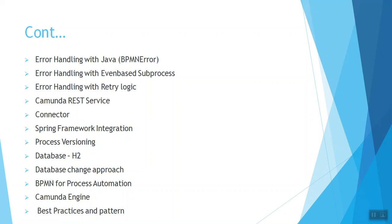Camunda comes with strong REST APIs for communicating with other applications. I'll show you how to use these REST APIs to deploy a process, start a process, complete a user task, and get metadata about deployments — like the count of running process instances or deployment count. We'll also cover connectors for calling REST services directly from the modeler.